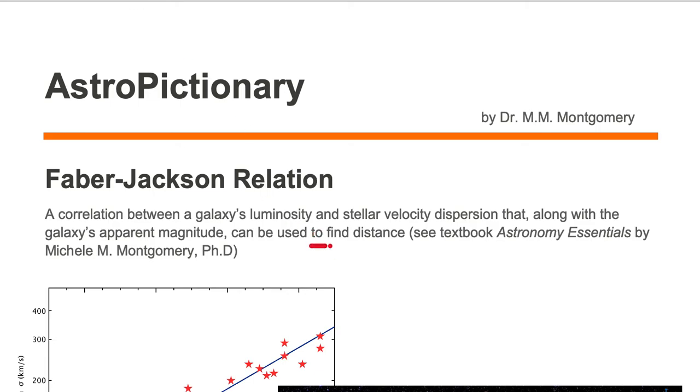Our goal is to find distance to various different celestial objects, and one way to do this is to use the Faber-Jackson relationship. In the Faber-Jackson relation, we need a galaxy's luminosity and we need the galaxy's stellar velocity dispersion.